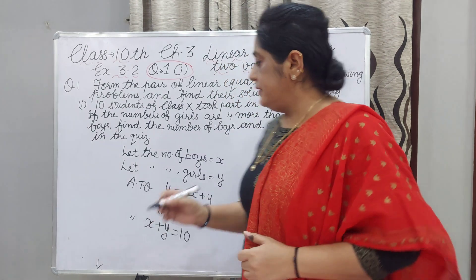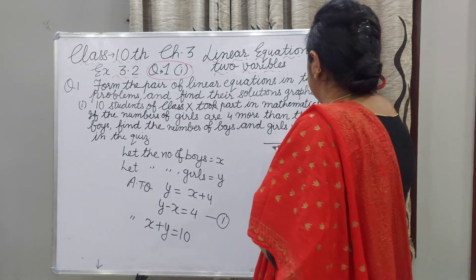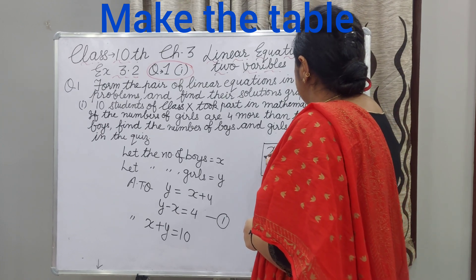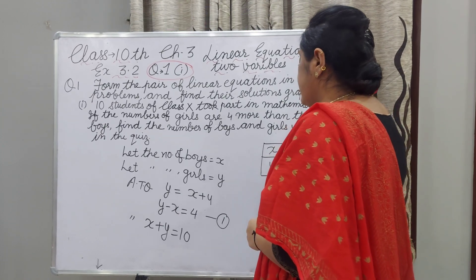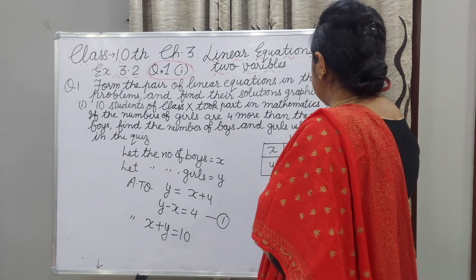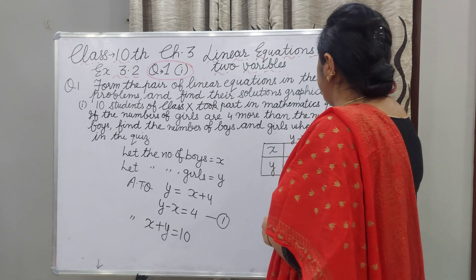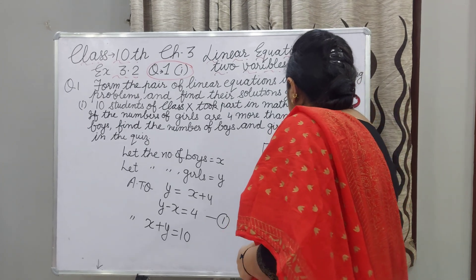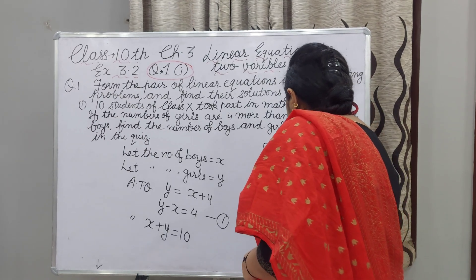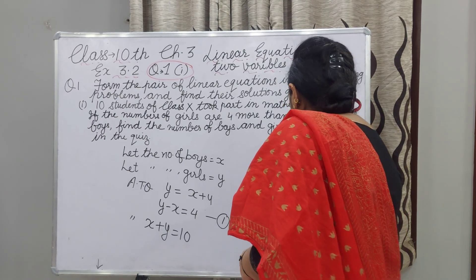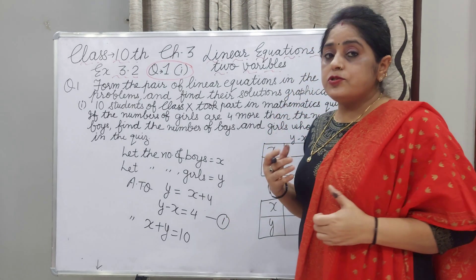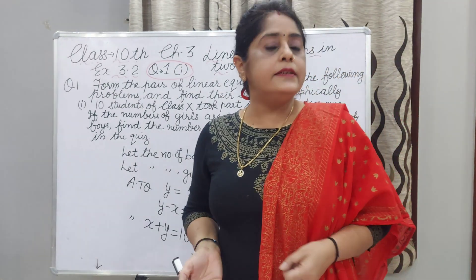Now we will make tables. One table for X and Y using Y minus X equals 4, and another table for X plus Y equals 10. You need at least two values, though you can take three values as well.